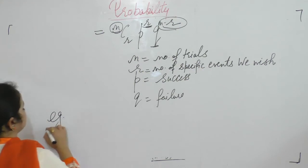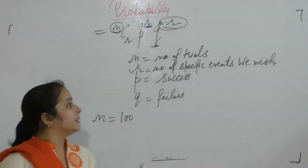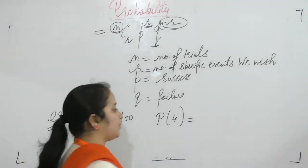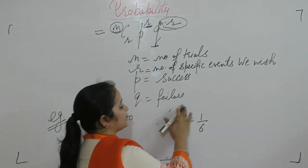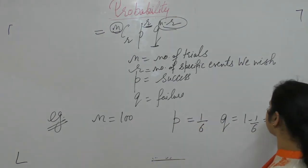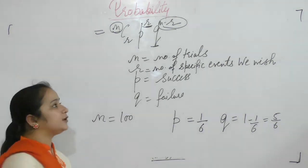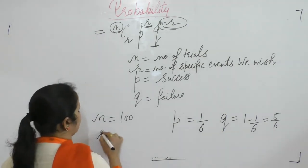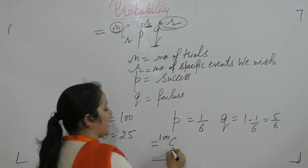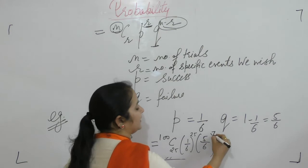Let us take an example. Suppose a die is rolled 100 times, so N equals 100. The probability of getting a four on one roll is one by six, so P equals 1/6. Therefore Q, the probability of failure, is 1 minus P, which equals 5/6. If we want the probability of rolling a four exactly 25 times, then R equals 25. The answer is: 100C25 · (1/6)^25 · (5/6)^75.